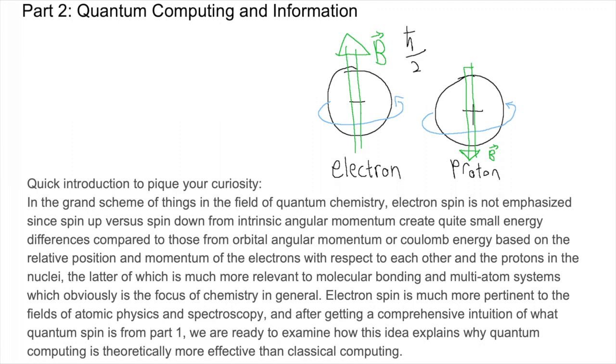Electron spin is much more pertinent to the fields of atomic physics and spectroscopy. After getting a comprehensive intuition of what quantum spin is from part one, we are ready to examine how this idea explains why quantum computing is theoretically more effective than classical computing.